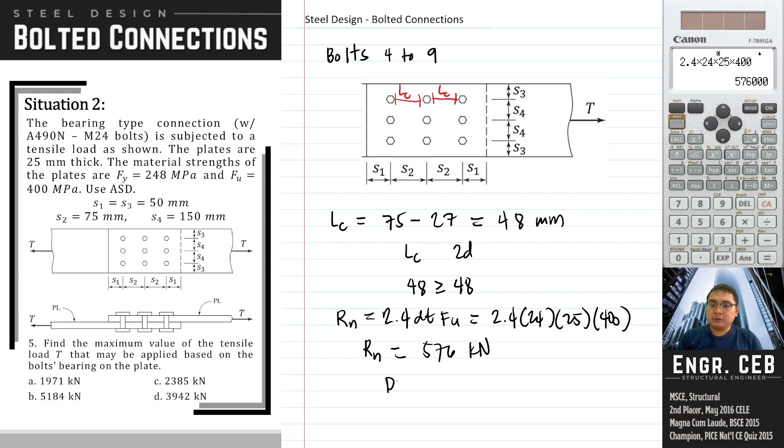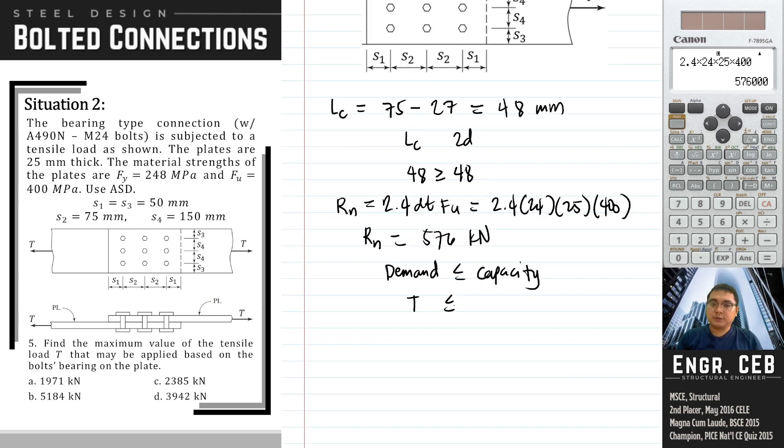We're going to compare the demand and the capacity. For the capacity, we get the total nominal strength of the bolts. For bolts 1, 2, and 3, the strength is 438.